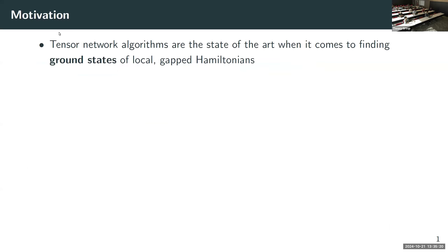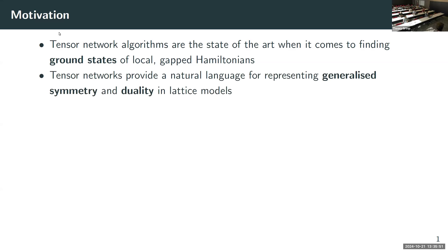The motivation is: there's this thing called tensor networks, and the state of the art for finding ground states of local gapped Hamiltonians — I should add a little asterisk here — in low dimensions, particularly in 1+1D, there is very little that does better than that. On one hand, they are very powerful numerical tools. On the other hand, it turns out — more of a recent observation — that they provide a very natural language for representing modern notions of symmetries directly on the lattice, including symmetries and dualities, in a very explicit and algebraic way.